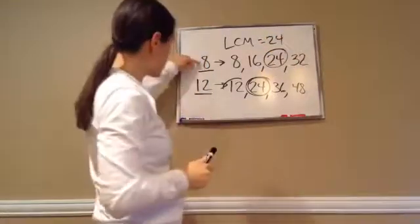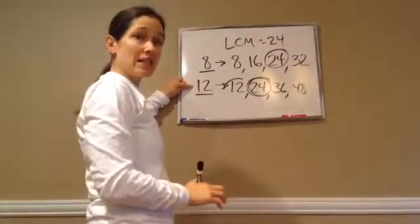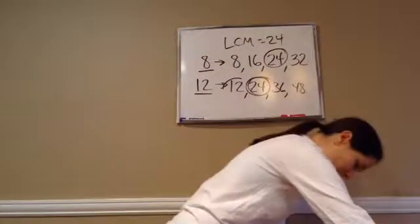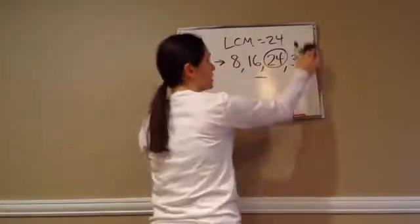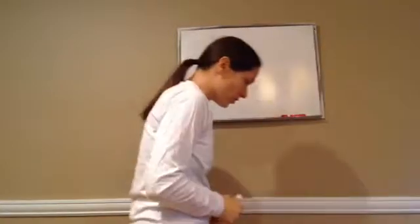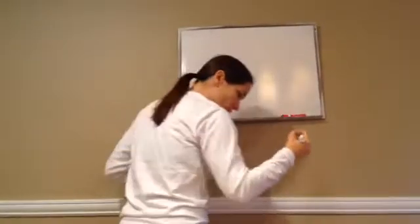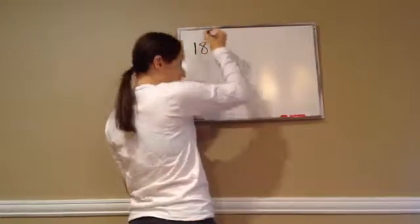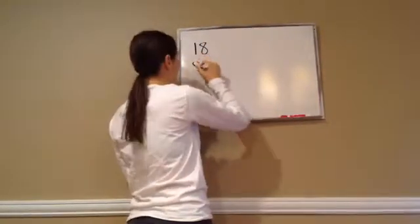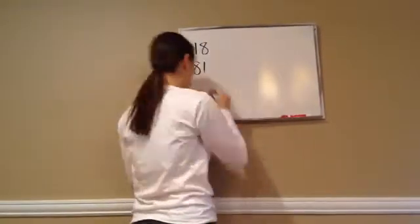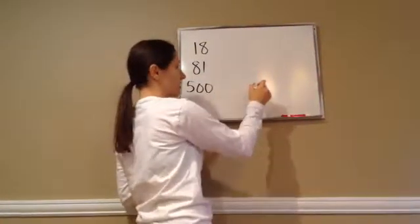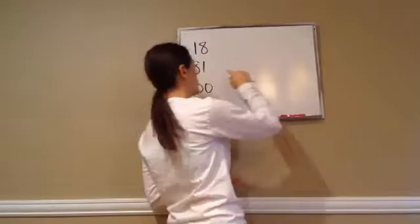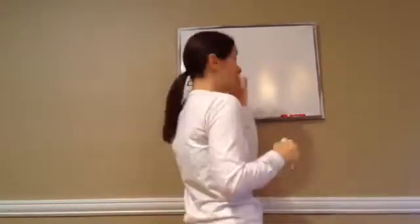Now, because these are small numbers it's easy to find the multiples. But when the numbers get large, it's very hard to find the multiples of something. So they've determined a new method. If I was going to find the Least Common Multiple of 18, 81, and 500, we couldn't just go 500, 1000, 1500 and then do 81 and keep going. There's a new method.